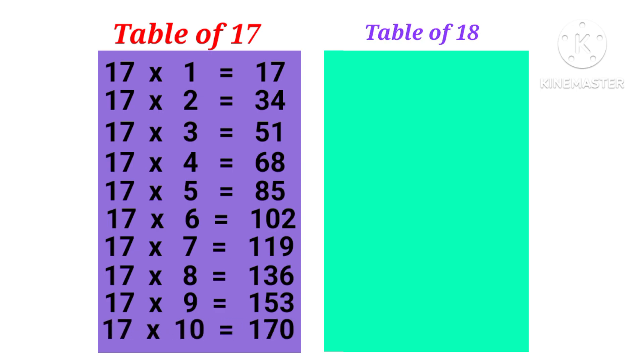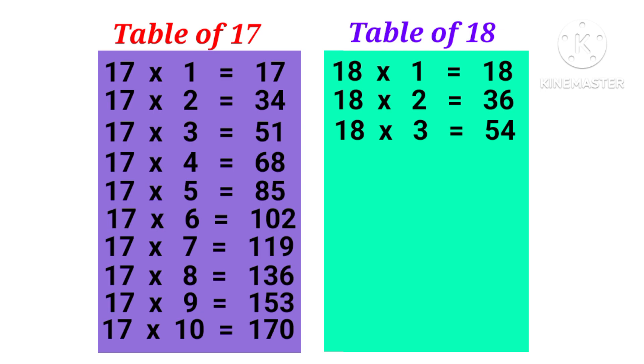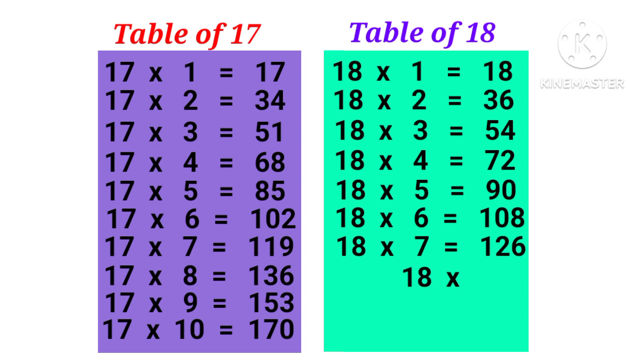18 1s are 18, 18 2s are 36, 18 3s are 54, 18 4s are 72, 18 5s are 90, 18 6s are 108, 18 7s are 126, 18 8s are 144, 18 9s are 162, 18 10s are 180.